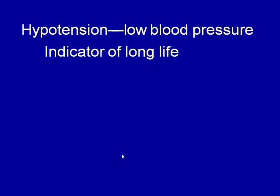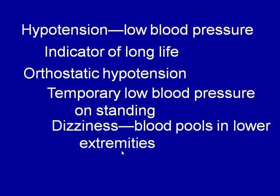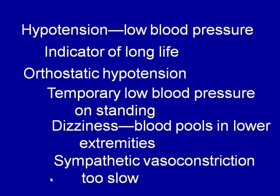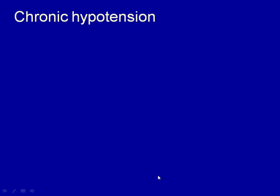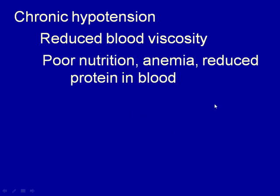Hypotension is low blood pressure. Running at the low end of normal blood pressure is an indicator of a long life. Orthostatic hypotension is when blood pressure drops upon standing, causing lightheadedness or dizziness — it results from a slightly slow sympathetic vasoconstriction response. Chronic hypotension is usually due to reduced blood viscosity, seen in people with poor nutrition, anemia, or reduced blood protein.